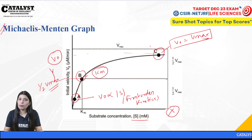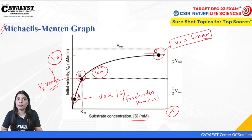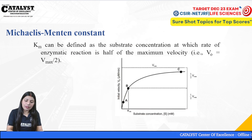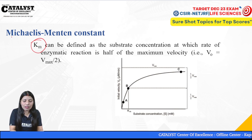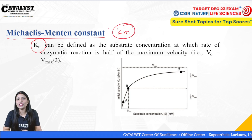This is the Michaelis-Menten graph, with substrate concentration on the x-axis and velocity on the y-axis. From this graph we can conclude all about the Michaelis-Menten constant, which we represent as Km. Many questions are based on this.